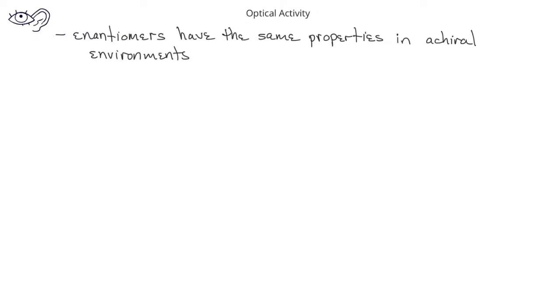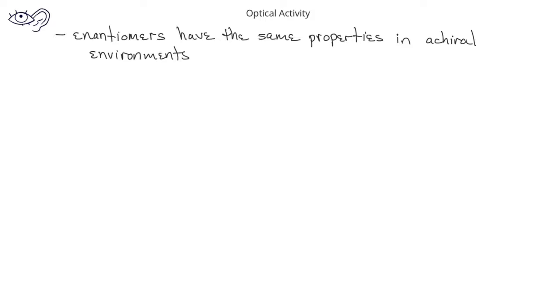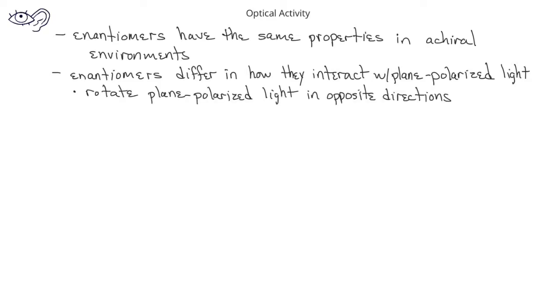We've already said that enantiomers will have the same chemical and physical properties in achiral environments. However, there are situations where enantiomers will differ in their interactions. For example, enantiomers will differ in how they interact with plane polarized light — specifically, they will rotate light in opposite directions. We say that these kinds of compounds are optically active.